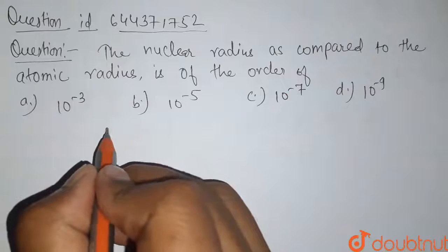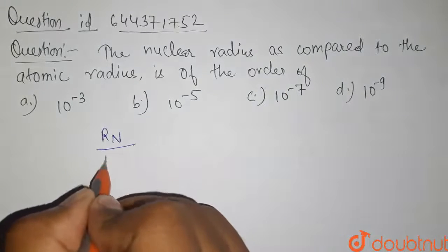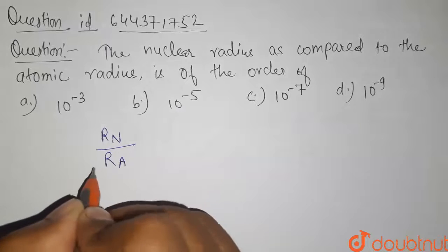So we have to find the ratio of nuclear radius to atomic radius.